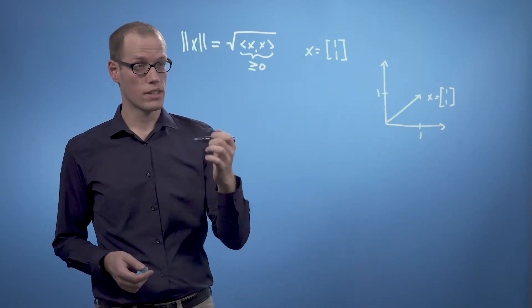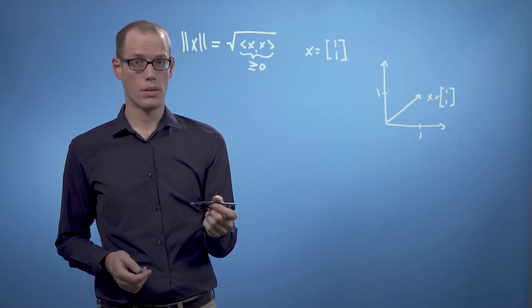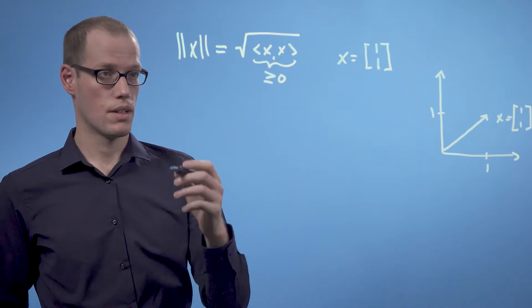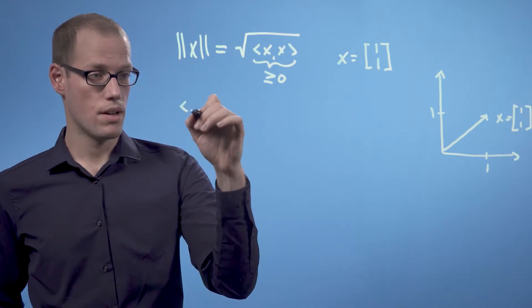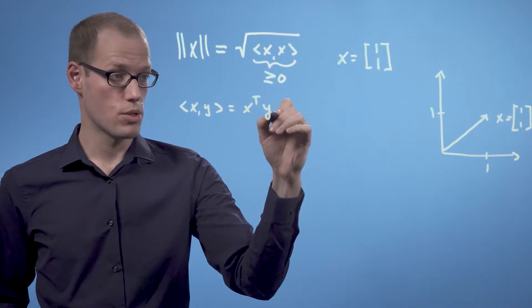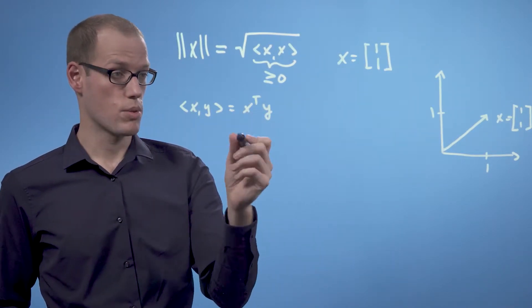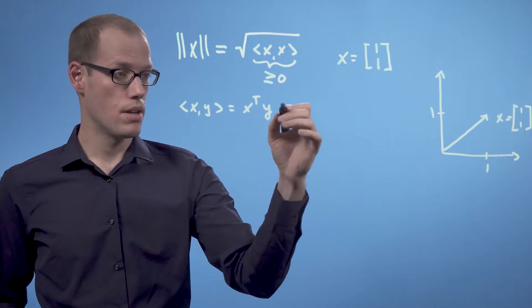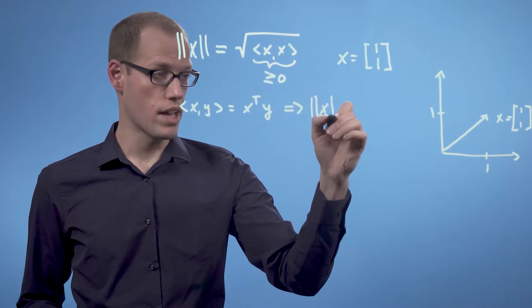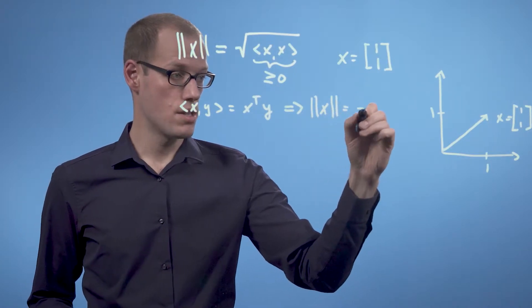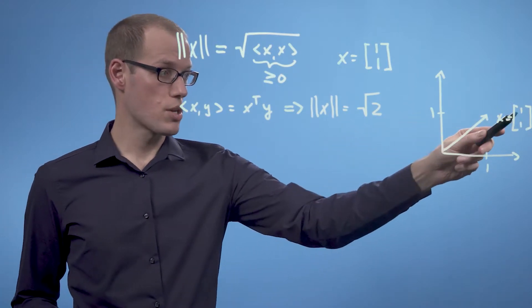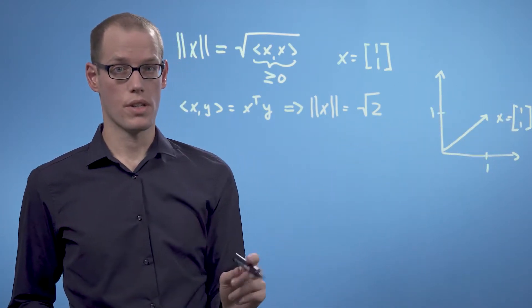So in order to compute the length of the vector, we need to define an inner product. So why don't we start with the standard dot product? If we define ⟨x,y⟩ to be x^T y, then the length of x is the square root of 2. So it's 1 squared plus 1 squared and we take the square root of this.